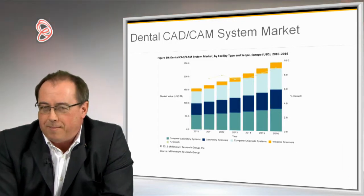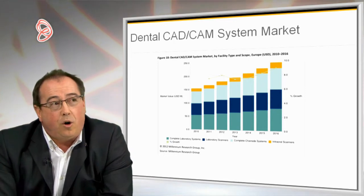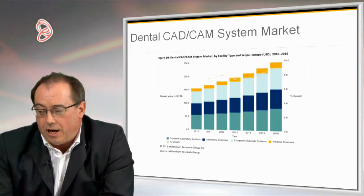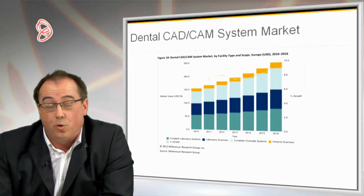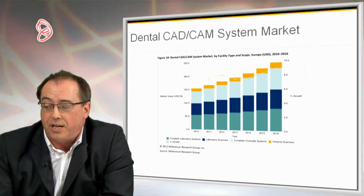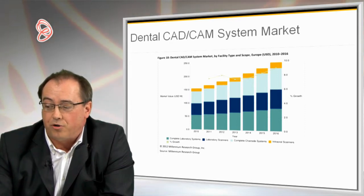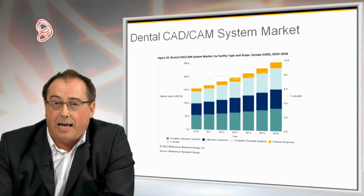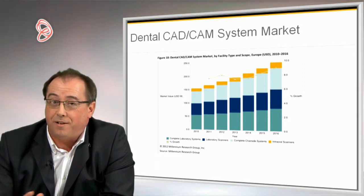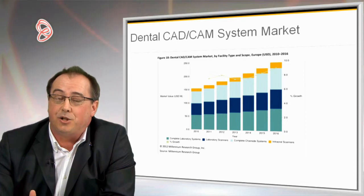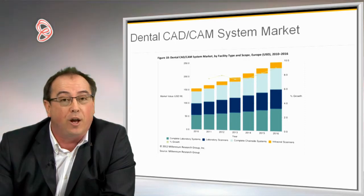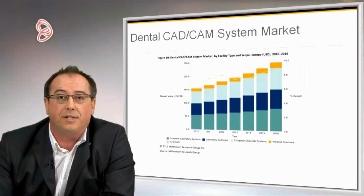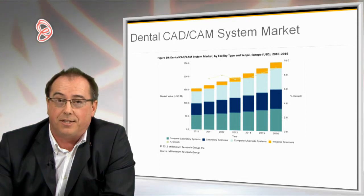A little bit about the market — where is the growth? If you see the right-hand section of this graph, you'll see the growth is in intraoral scanners and digital impressioning scanners, which outstrips complete chairside systems. Although these two put together are growing at a far greater rate than laboratory scanners and complete lab systems. That's because the labs, on the whole, are waiting for you to turn digital. The missing link is the digital impression. The labs have embraced the technology — many Crown and Bridge labs work in a digital workflow, but their digital workflow starts at scanning a gypsum model, not at scanning your patient.